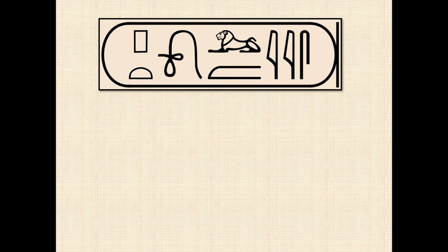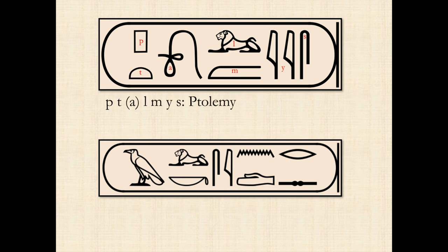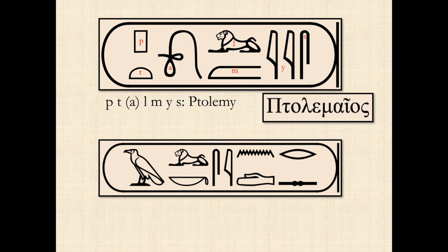Let's take a look at hieroglyphs. This is a hieroglyph of a very famous king — each one of these little symbols represents either an idea or a sound. In the case of foreign names, each symbol represents a sound of his name. For example, these symbols spell out P, T, A, L, M, E, S — Ptolemy, or Ptolemus as we say in Greek, or Ptolemy in English.